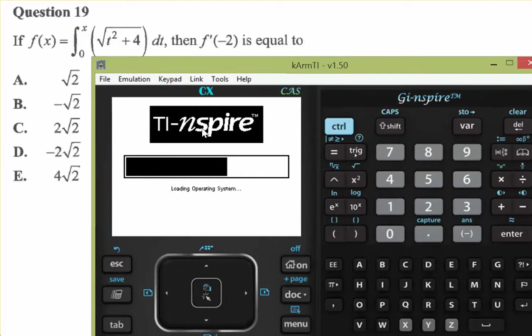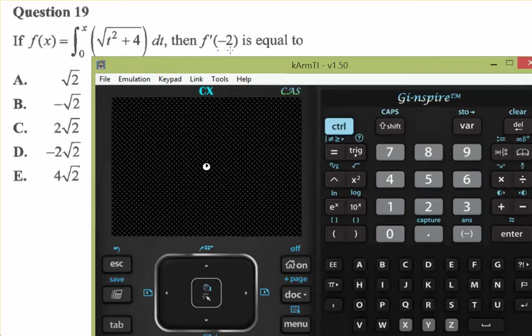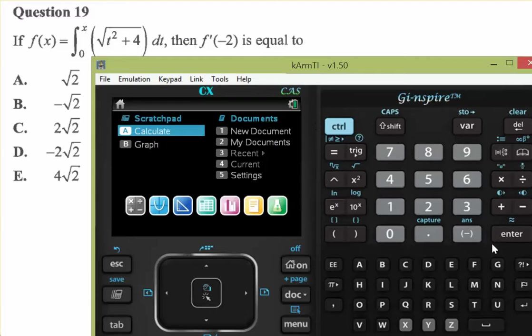So the CAS method really is to actually evaluate this integral, get rid of the dummy variable t, get it in terms of x. Take the derivative, and then find f dash of 2. So let's go through all those steps.